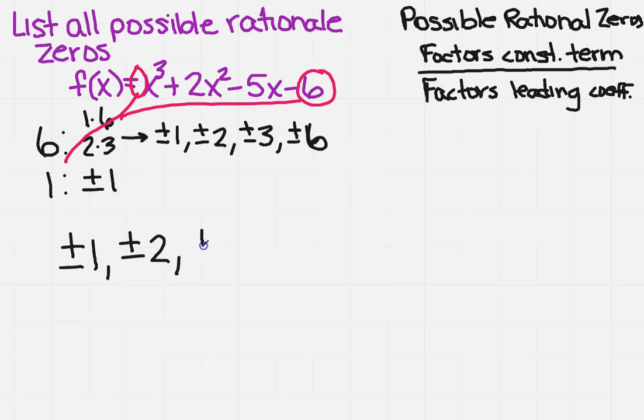3 divided by 1, so I'm going to have plus or minus 3. Finally, 6 divided by 1, plus or minus 6. So these are all of your possible rational zeros.